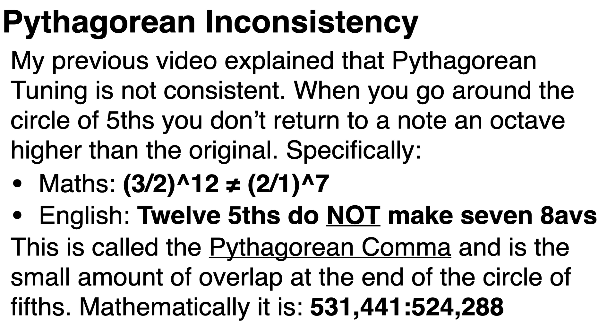This is expressed mathematically as follows. And in English, all this means is 12 fifths does not equal seven octaves. And we saw that the difference between these two octave frequencies is called the Pythagorean comma. And it's 531,441 on 524,288.